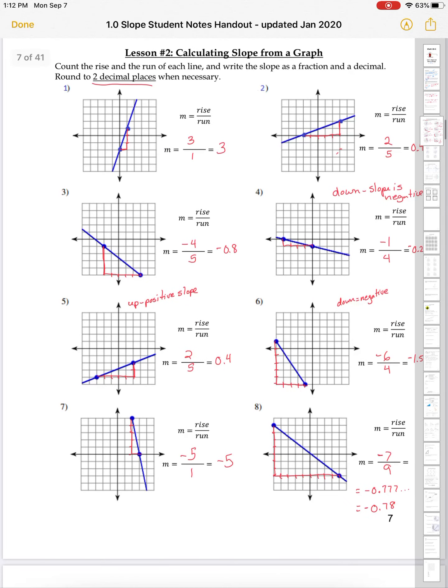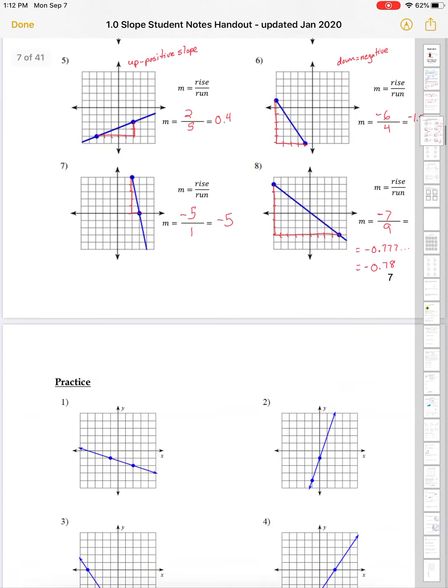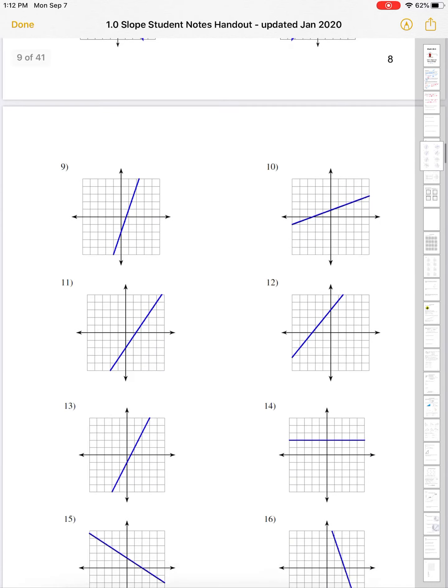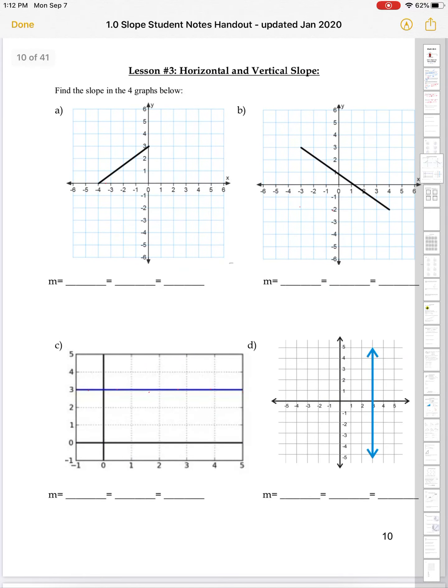So that was our first lesson. Then, this morning, we talked about taking a graph and calculating slope from a graph, using those points on a grid to help us count our rise and our run. And talking about the difference between a positive and a negative slope as well. A positive slope goes up from left to right and a negative slope goes down. And we generally calculate that using our rise. Because if our rise is going down, we'll make it a negative number. If it's going up, we'll make it a positive number.